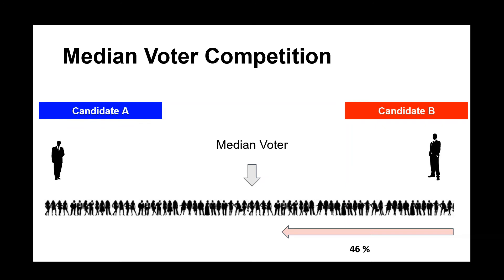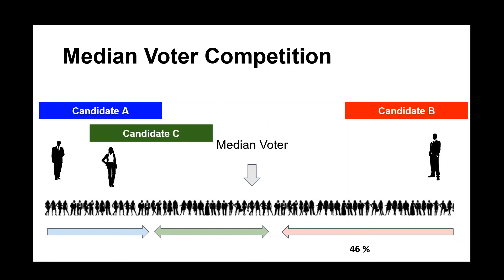Another method of trying to influence the position of the median voter is by encouraging third parties to enter the race. This will sometimes happen on a state-by-state basis, where one party will try and convince a third party to get on the ballot, or they might assist them in legal efforts to get on the ballot. Why? Well, with a third party that happens to occupy the same issue space as candidate A,